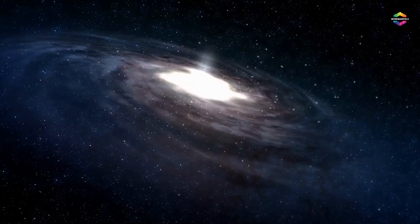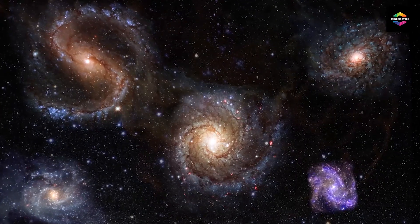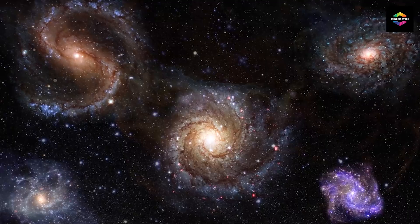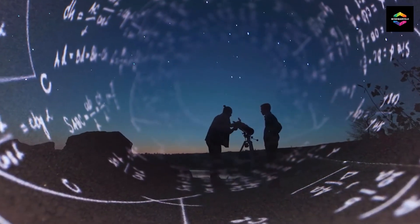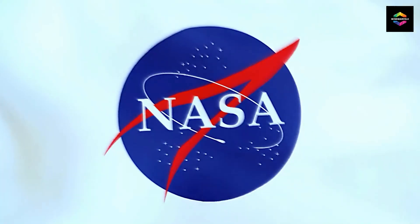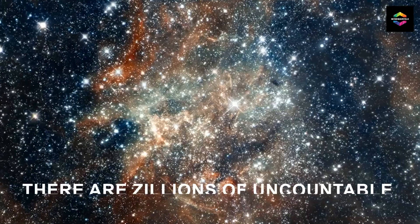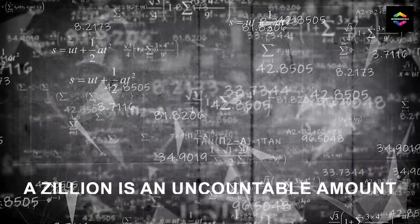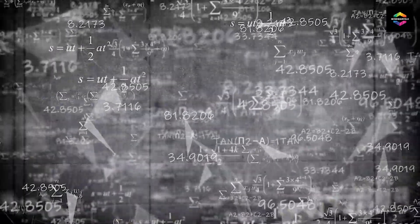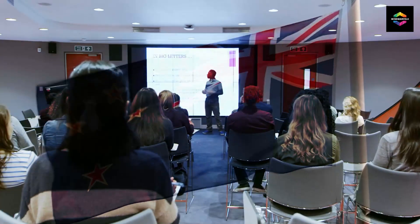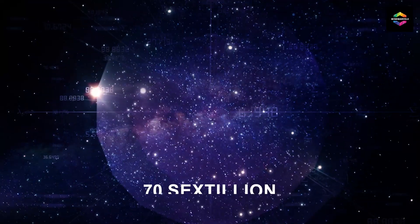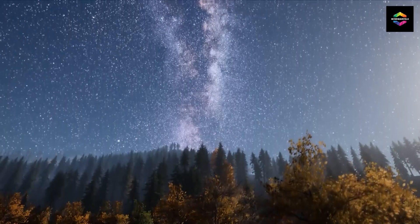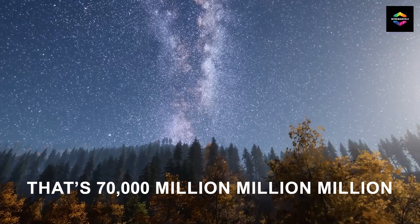We next multiply that number by the best approximation of the number of galaxies in the universe. After all of those mathematical operations, NASA confidently states that there are zillions of uncountable stars in the universe. A zillion is an uncountable amount. An Australian National University study put their estimate at 70 sextillion. Put another way, that's 70,000 million million million million. Oh, it's unbelievable.